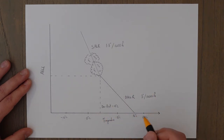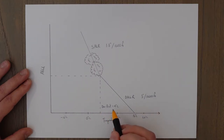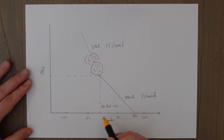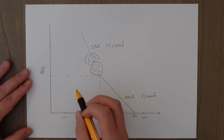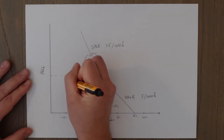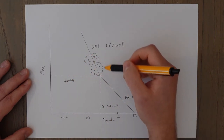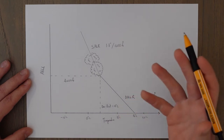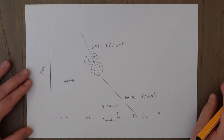This means you can estimate the cloud base if you know the current temperature and the dew point. In this example, we go from a temperature of 16 degrees Celsius and a dew point of 4 degrees Celsius — a 12 degree change — at 3 degrees every thousand feet, so we can estimate the cloud base at 4,000 feet. The actual height of the clouds will depend on the stability of the atmosphere.